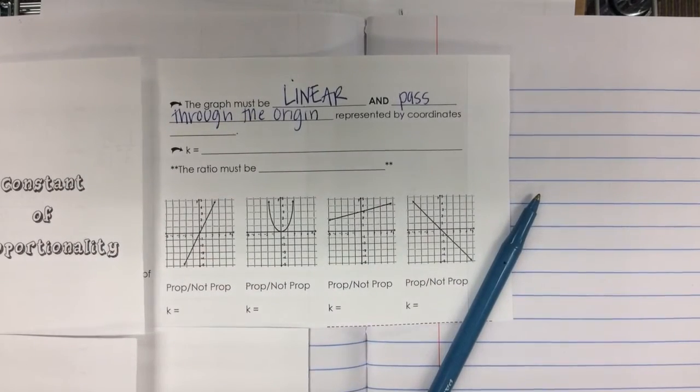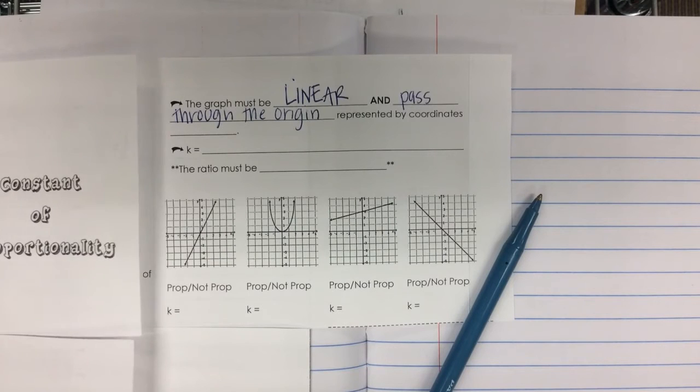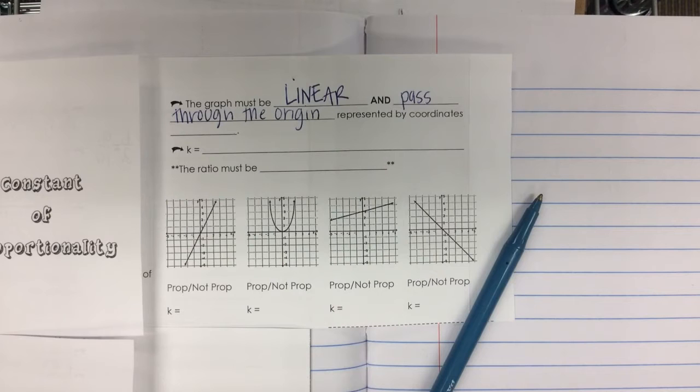A graph, so today we're going to be working with graphs, and your graph must be linear. So two things, and it must pass through the origin.